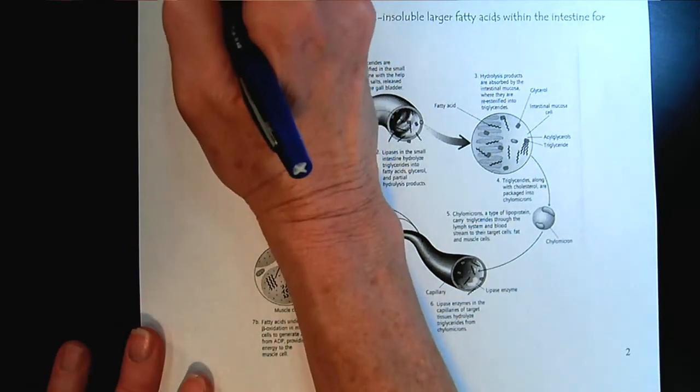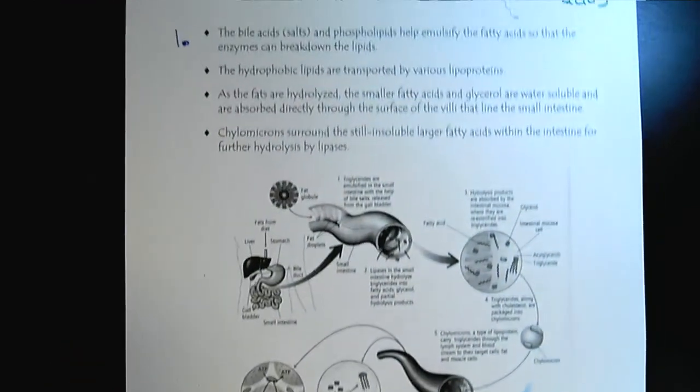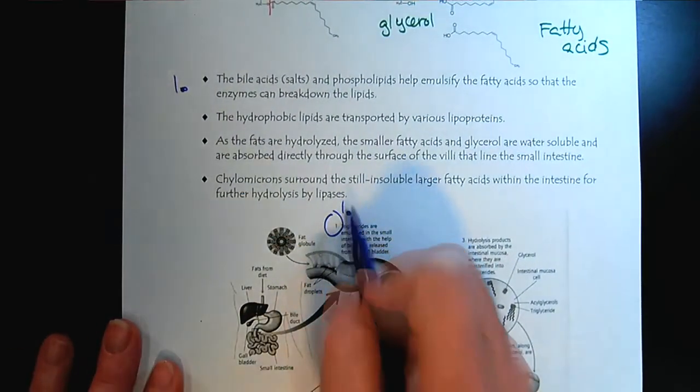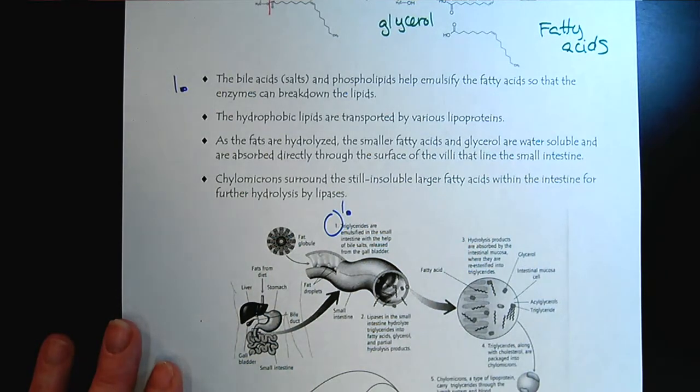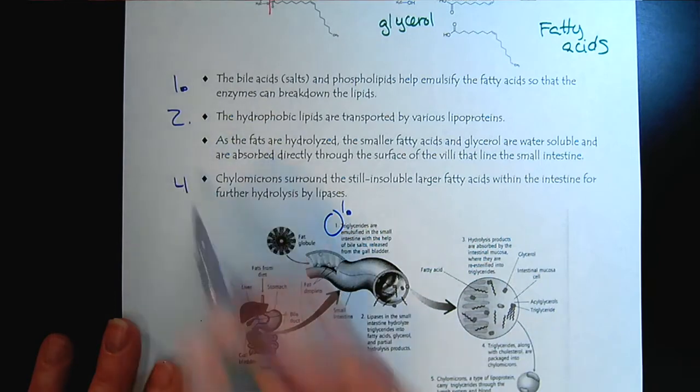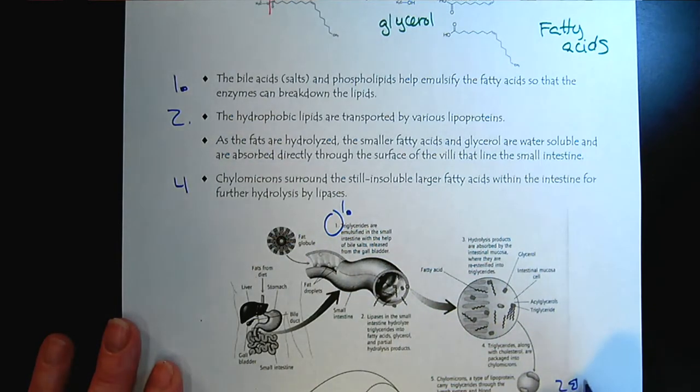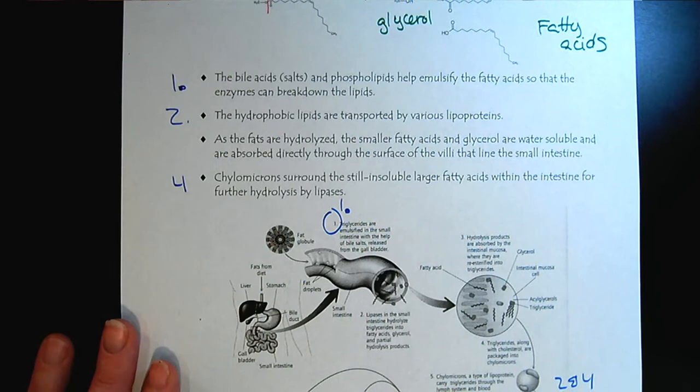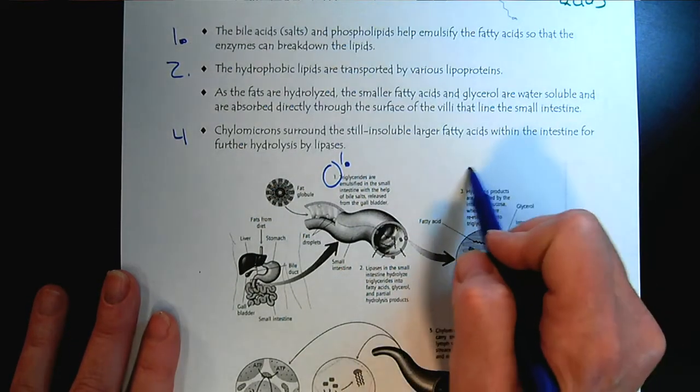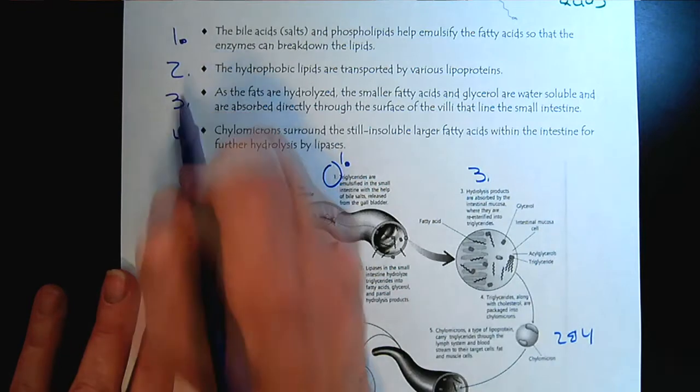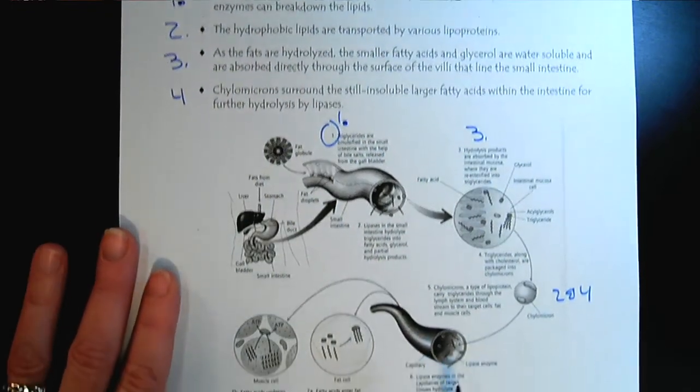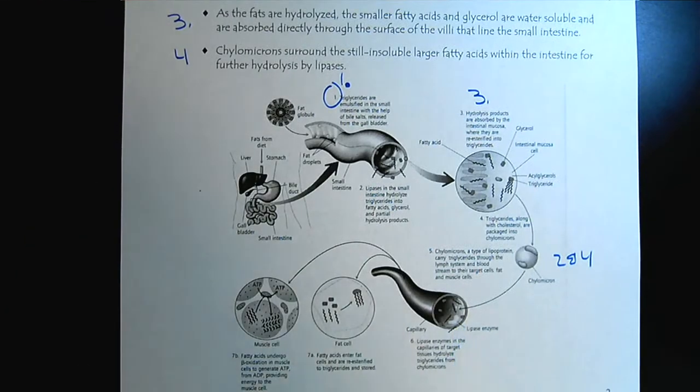So I've talked about it in a verbal description. And then we can see everything here. There's the fats from our diet, there's our stomach, the bile duct off of our liver. Basically everything that I just described verbally is here for you in a diagram. So this statement about the bile acids is right there. And then the transport molecules and the hydrolysis occurring.